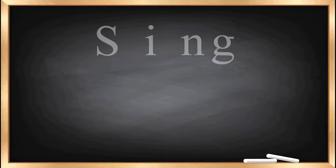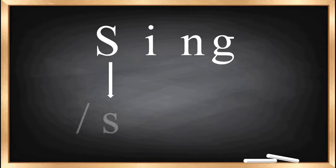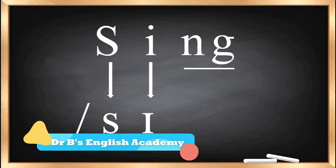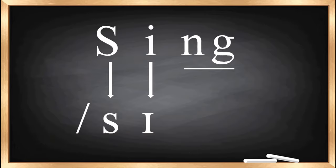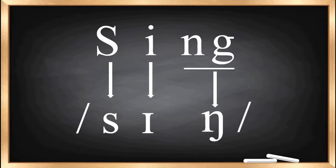The next word is 'sing'. For S the sound is /s/, for I the sound is /ɪ/, and here NG produces only one sound: /ŋ/. This is the way you can transcribe the word 'sing': /sɪŋ/.